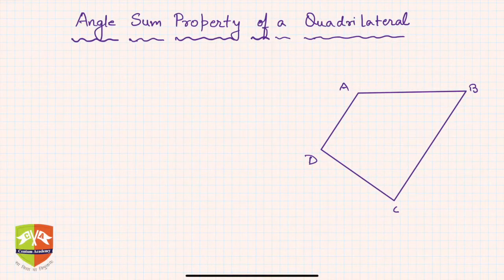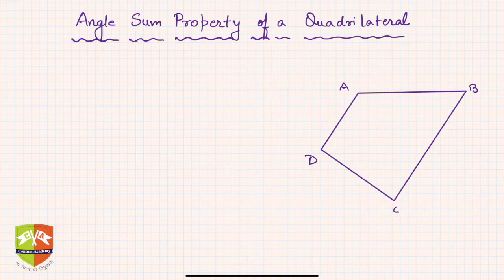Welcome again to another session on quadrilaterals. Now let us understand a very important property — the angle sum property of a quadrilateral. While dealing with triangles, you would have seen a similar property: the angle sum property of a triangle.